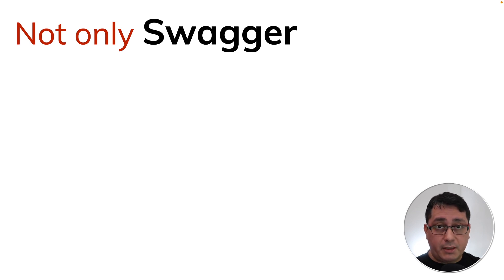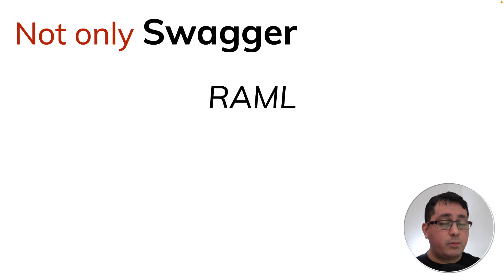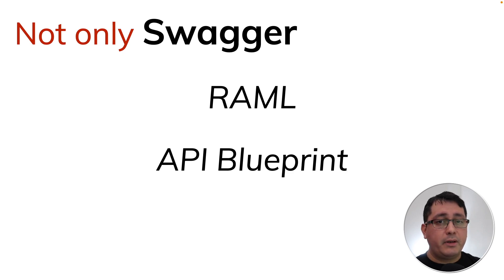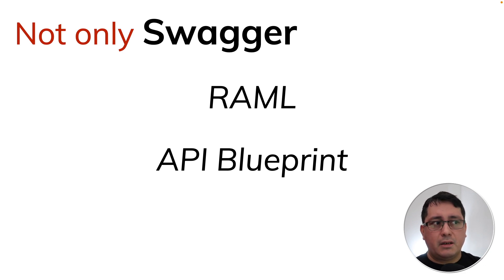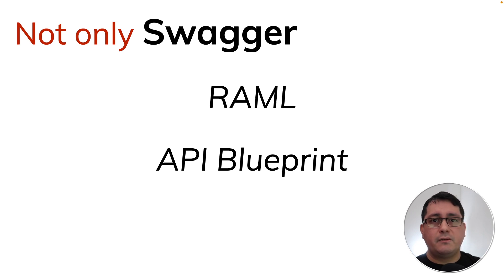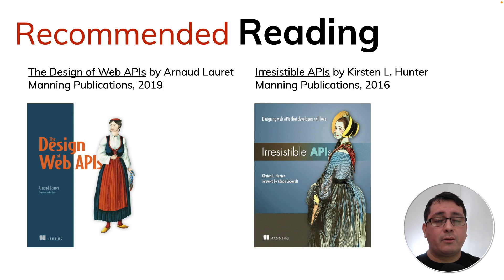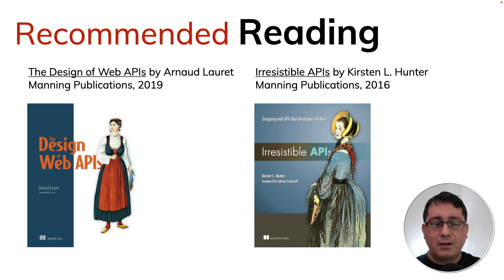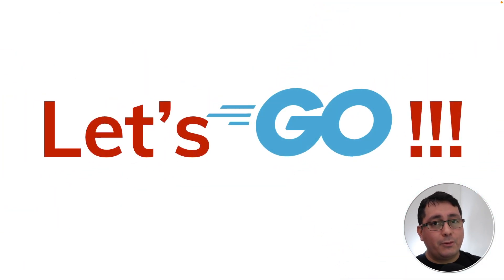Swagger also documents authentication methods, contact information, licenses, and similar things. It's not the only way to document web APIs — other popular ones include RAML and API Blueprint; links to those will be in the description. This is not a complete introduction to Swagger but rather the concept of code-first APIs. If you want to read further, I recommend two books: 'The Design of Web APIs' and 'Irresistible APIs', both published by Manning.